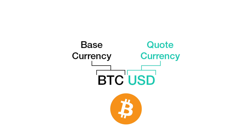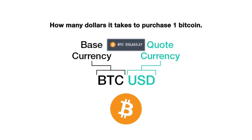Just like with the cryptocurrency call options discussed in section 4, with the cryptocurrency put options on Deribit that we will be covering in section 6, we are using the base currency for collateral and payments rather than the quote currency. The profits are still calculated in the quote currency — USD — but they are paid in the base currency — BTC. You can think of any tradable currency or asset pair as the price of the base currency quoted as an amount of the quote currency, or put another way, how many of the quote currency it takes to purchase one of the base currency. In the example shown here, it's how many dollars it takes to purchase one bitcoin.